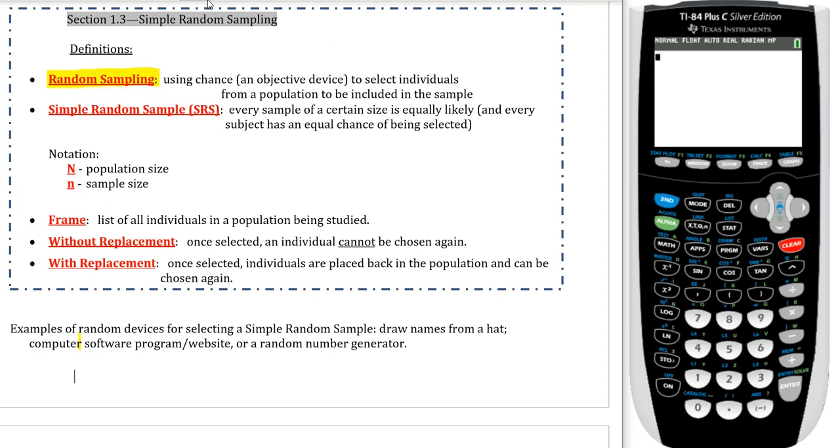But we didn't really talk about yet how we gathered those individuals at the beginning. That's what we're going to be talking about in 1.3 and 1.4. So first 1.3 we're going to talk about the best way to gather individuals. The best way to do that is to incorporate randomness into your study, and therefore we have what we call random sampling.